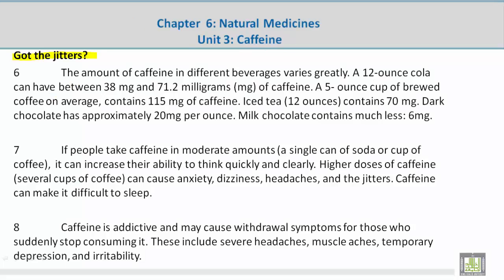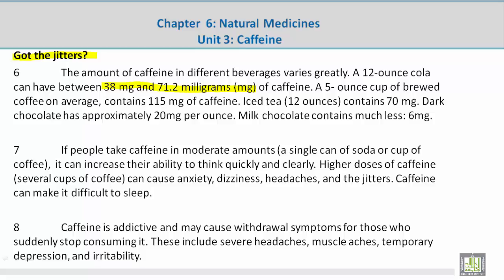The amount of caffeine in different beverages varies greatly. A 12-ounce cola can have between 38 mg and 71.2 mg of caffeine. A 5-ounce cup of brewed coffee on average contains 115 mg of caffeine. Iced tea, 12 ounces, contains 70 mg. Dark chocolate has approximately 20 mg per ounce; milk chocolate contains much less — 6 mg.